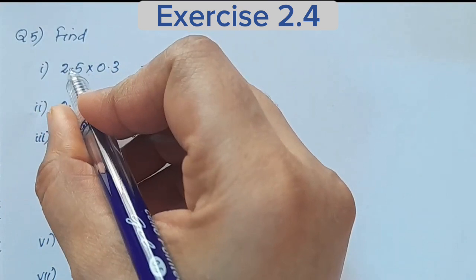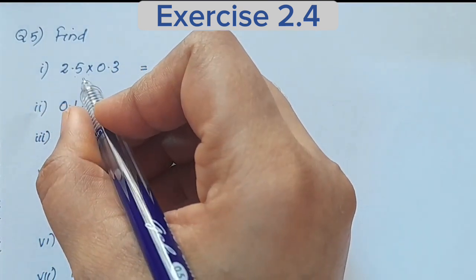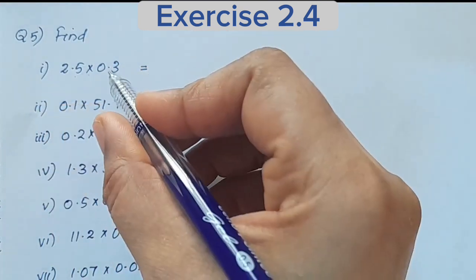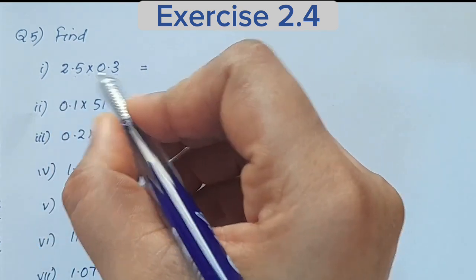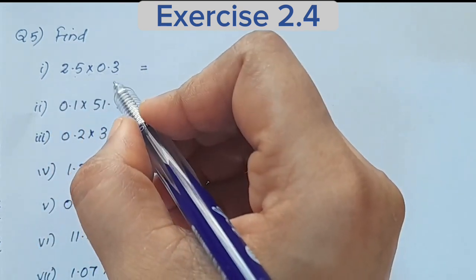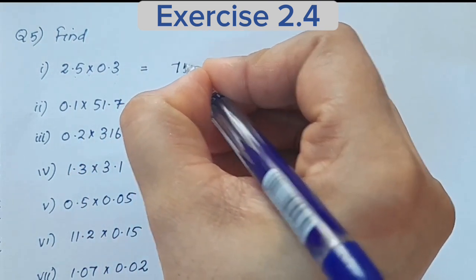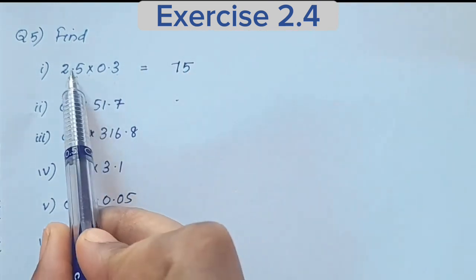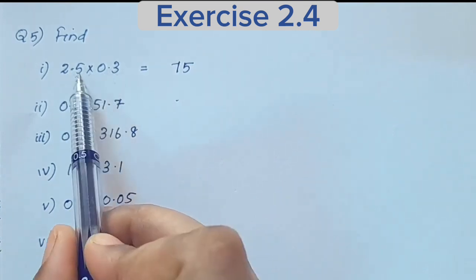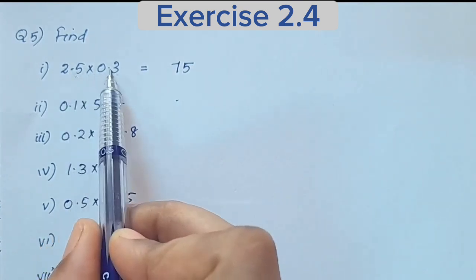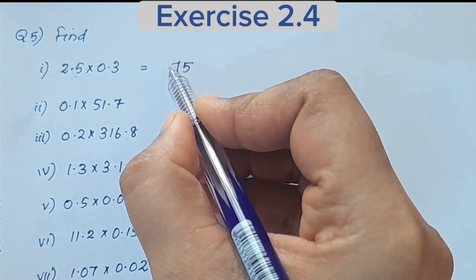What do we do with the decimal point? We remove the decimal points and multiply 25 by 3, then place the decimal point back in the result.